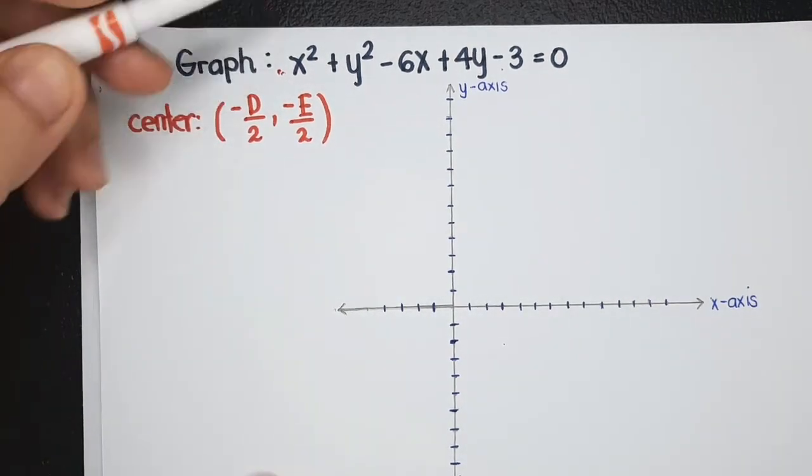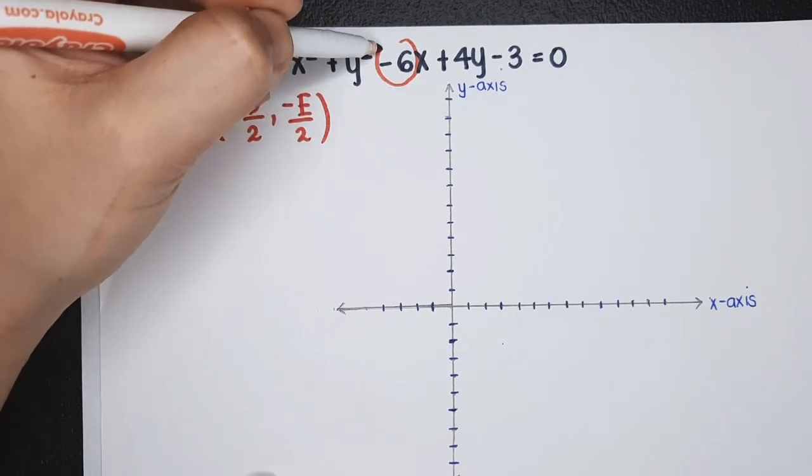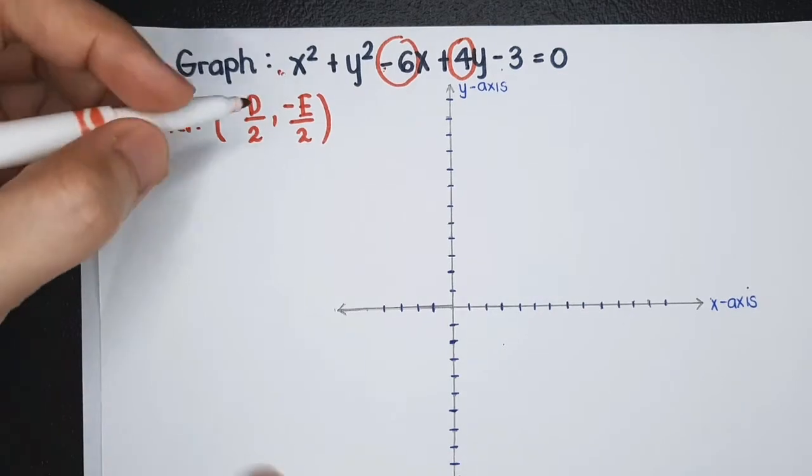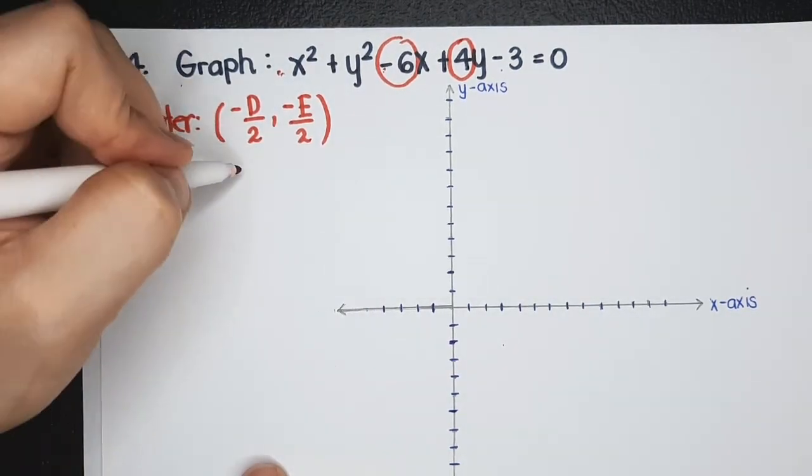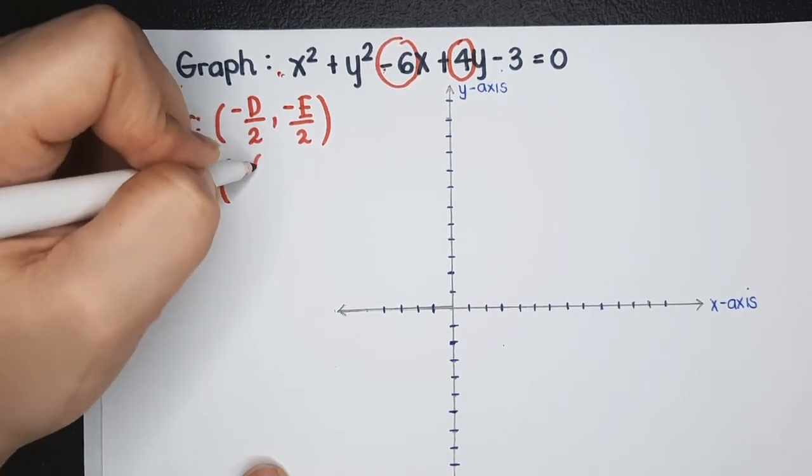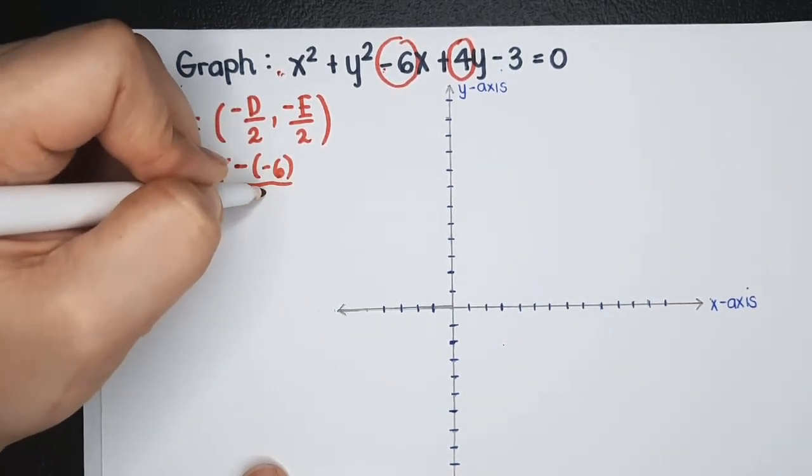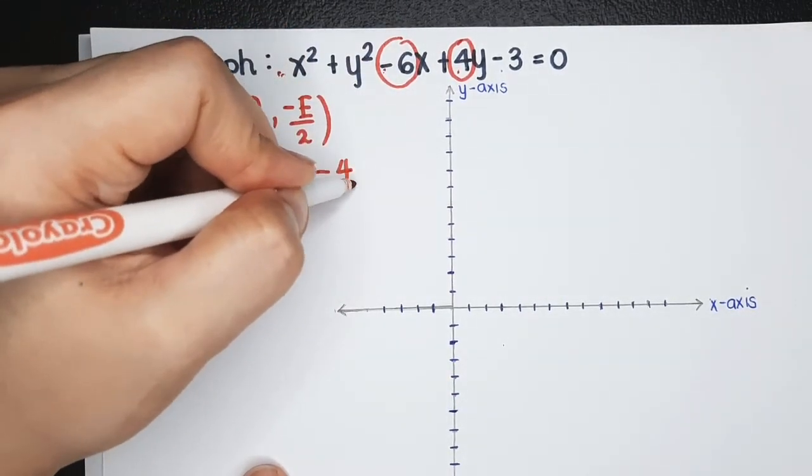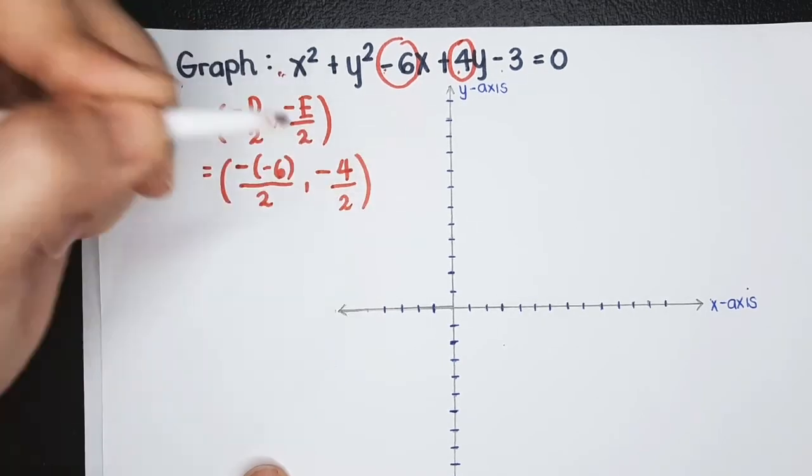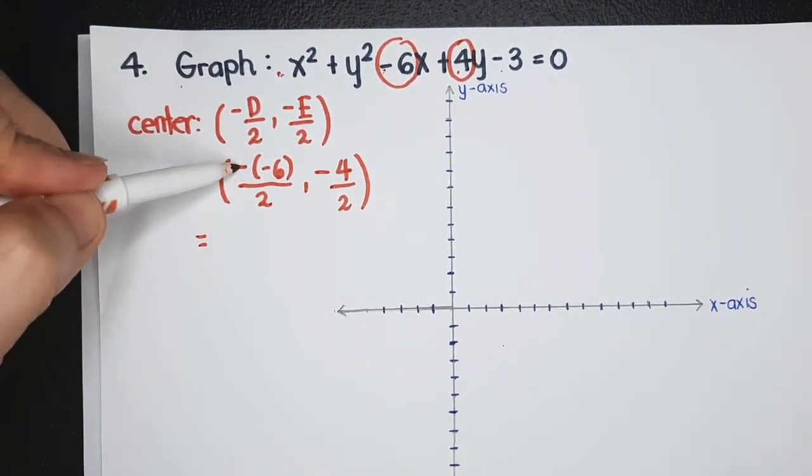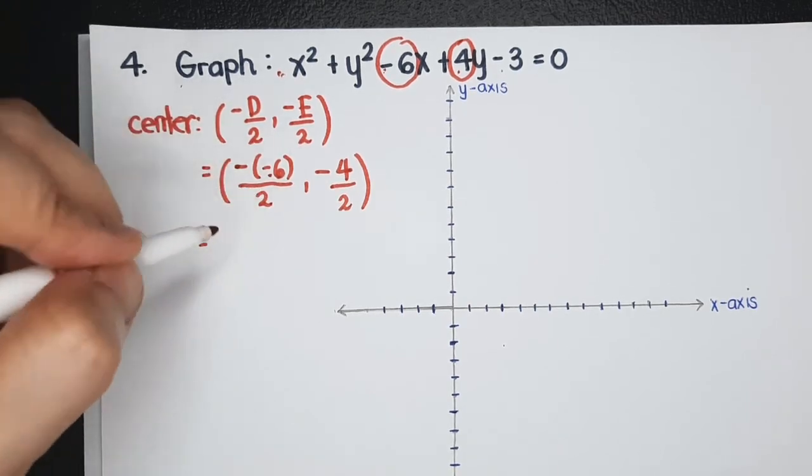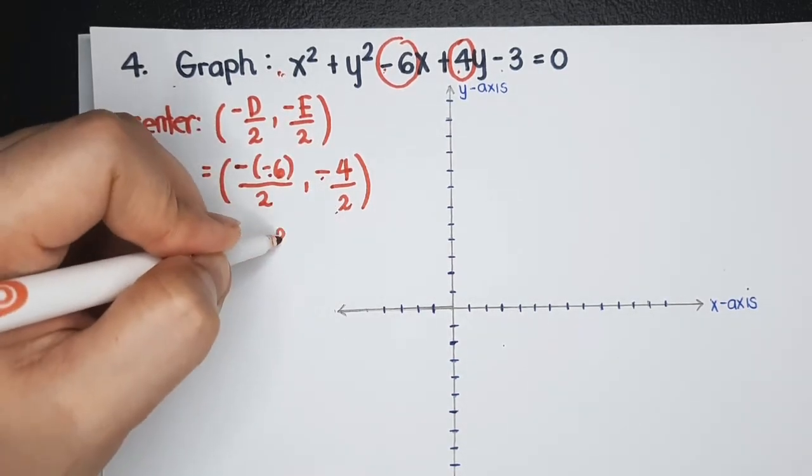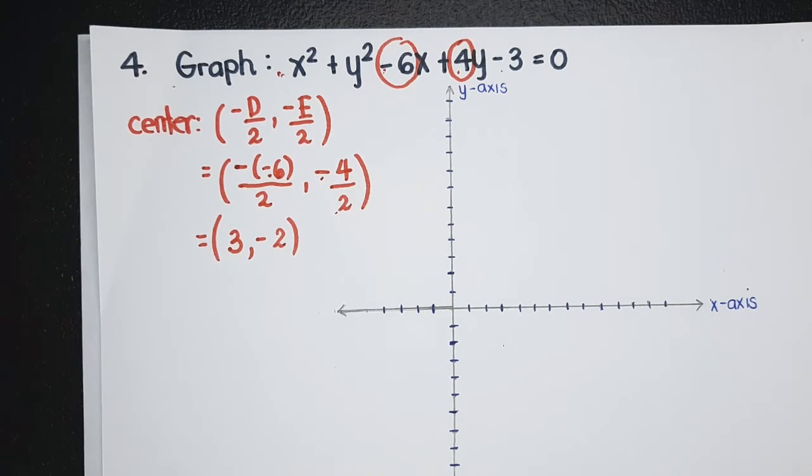To get the center, let us recall, the center has coordinates negative d over 2 and negative e over 2. d is the coefficient of x, including the sign. e is the coefficient of y. Therefore, the center is negative of d, so negative of negative 6 divided by 2, and the y coordinate, negative e, so 4 over 2. Simplifying, negative of negative 6, positive 6 divided by 2, you have 3. Negative 4 divided by 2, you have negative 2.